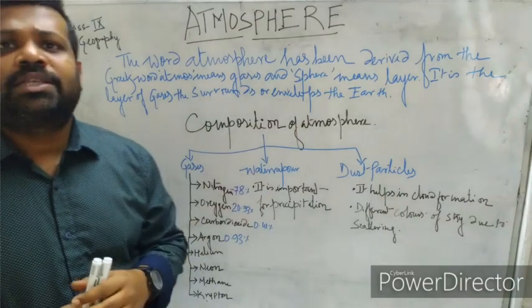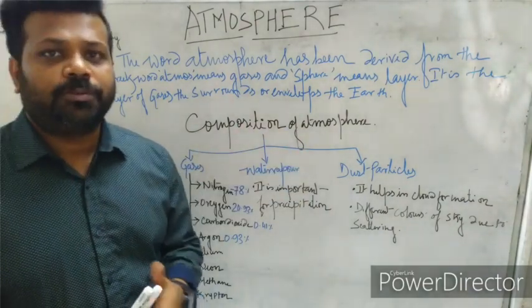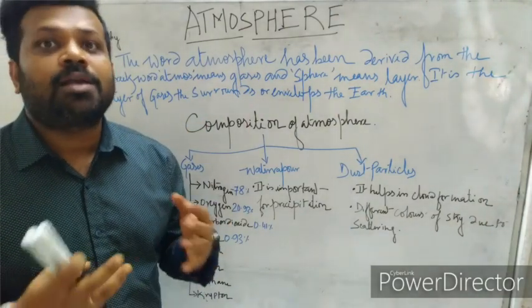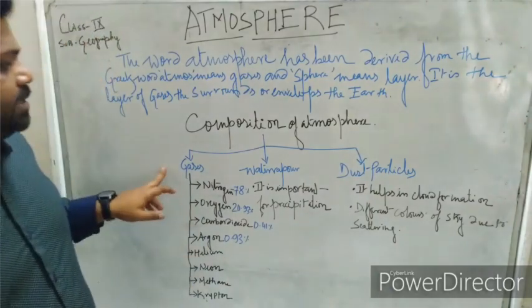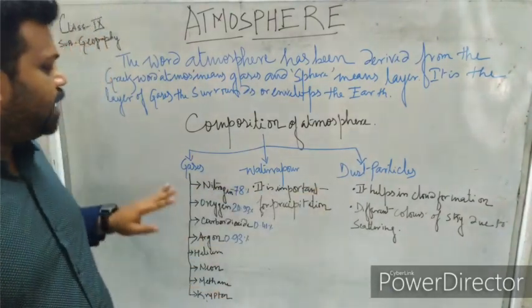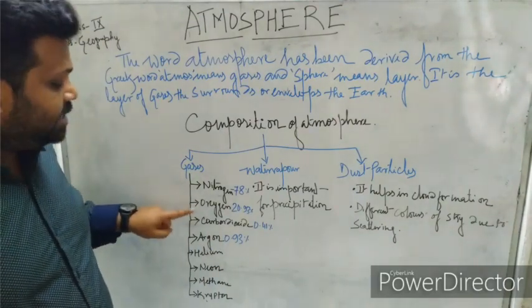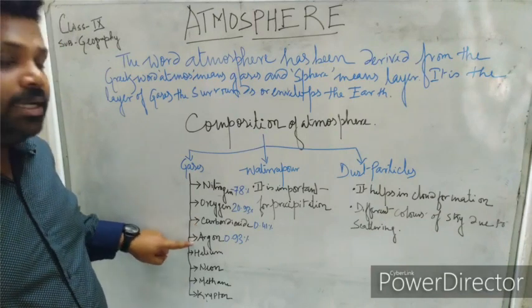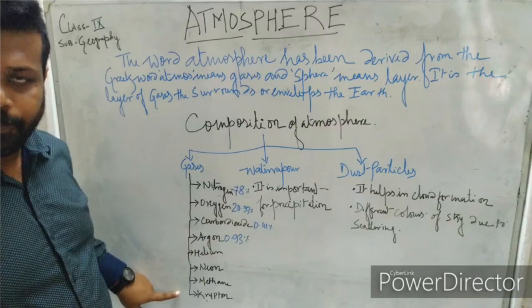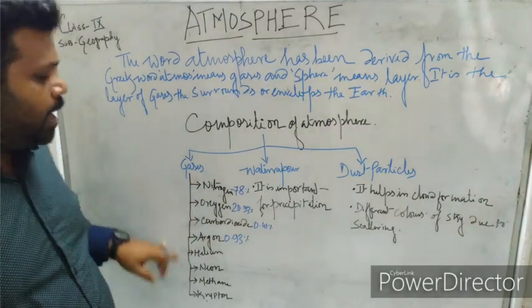Now, what is the atmosphere composed of? The atmosphere is composed of three main constituents: gases, water vapor, and dust particles. Among the gases, the main elements are nitrogen, oxygen, carbon dioxide, argon, helium, neon, methane, and krypton.